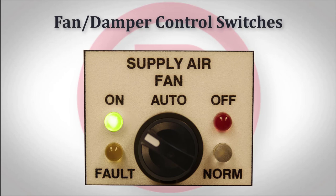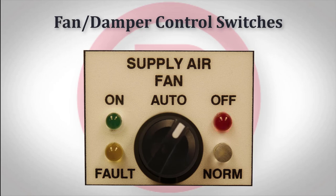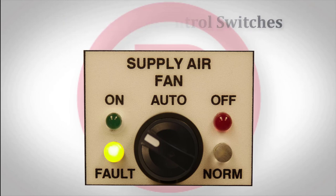To manually turn off or close the fan or damper, turn the key to the off or closed position. Once the panel sees a positive off or closed feedback from the fan or damper, the off LED will illuminate. The fault LED will illuminate if the panel does not receive a positive feedback signal from the fan or damper.